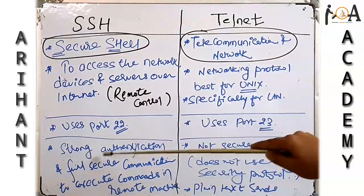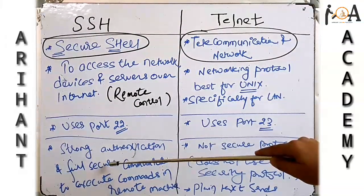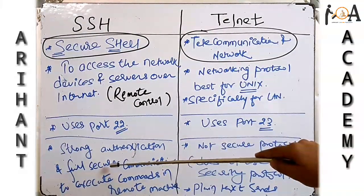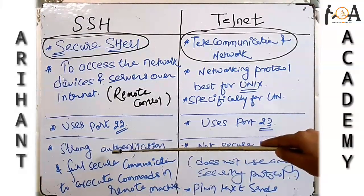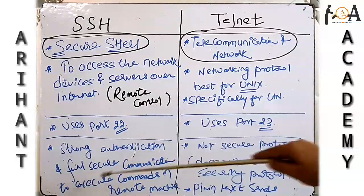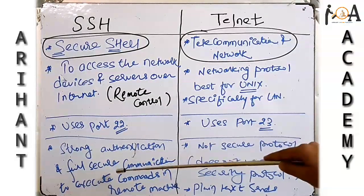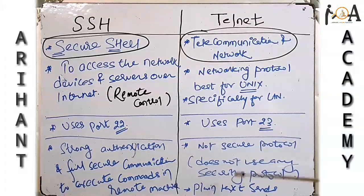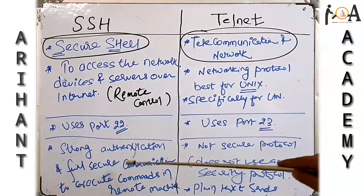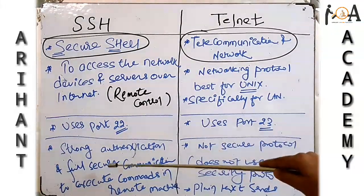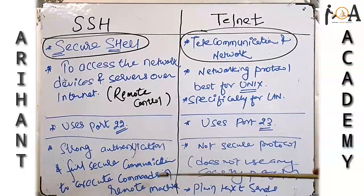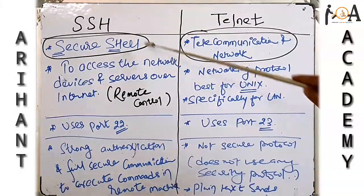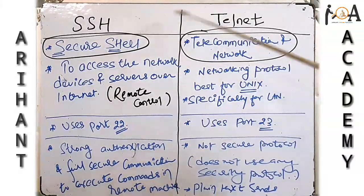In SSH, data is transmitted in encrypted form during communication. Whereas in Telnet, only plain text data can be sent — no encryption is used. That is why Telnet is not as secure, while SSH is very strong and fully secure. These are the basic differences between SSH and Telnet.